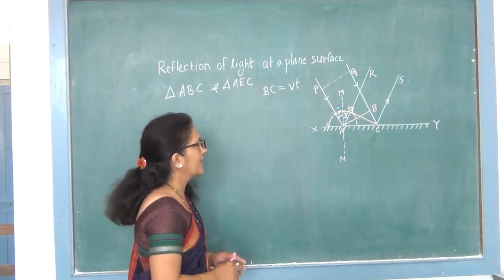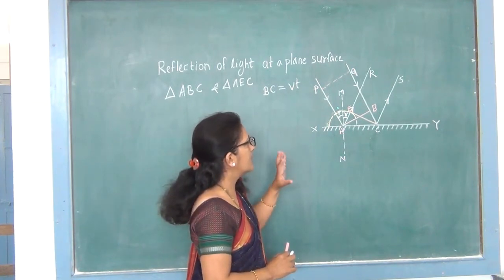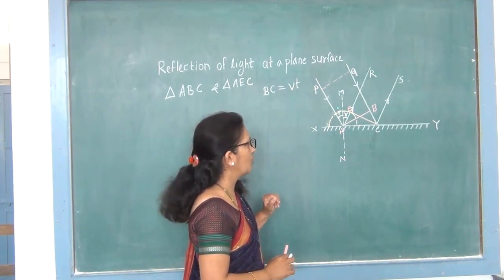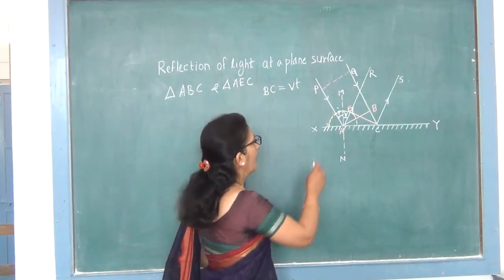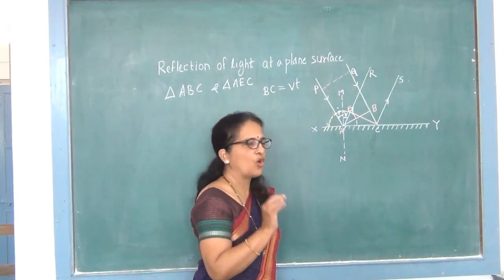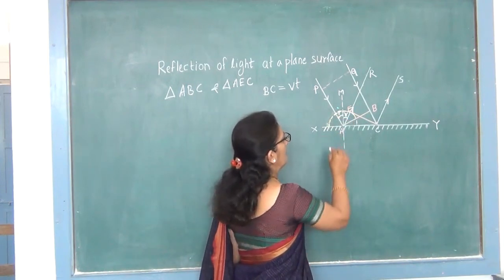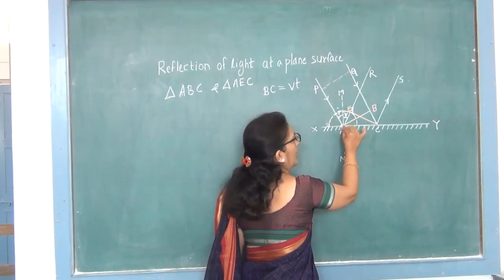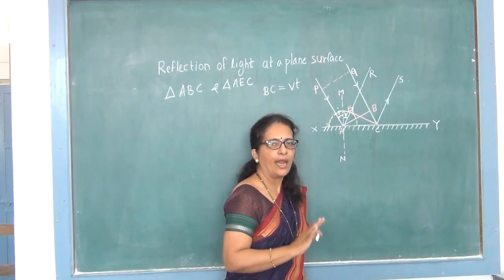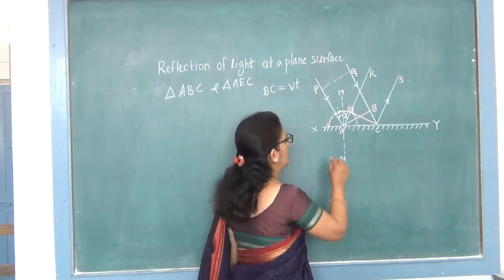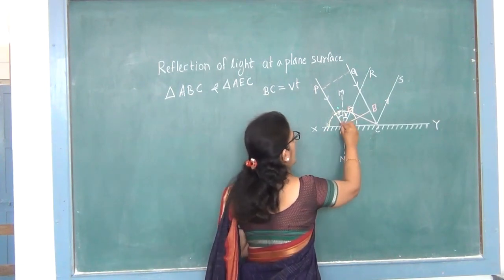MN is the normal at point A, normal to the reflecting surface. PA is the incident ray. The angle between the incident ray and the normal is called the angle of incidence, shown by letter I. Similarly, the angle between the normal to the surface and the reflected ray is called the angle of reflection. We have to show these two angles are the same. We will consider two triangles: triangle ABC and triangle AEC.